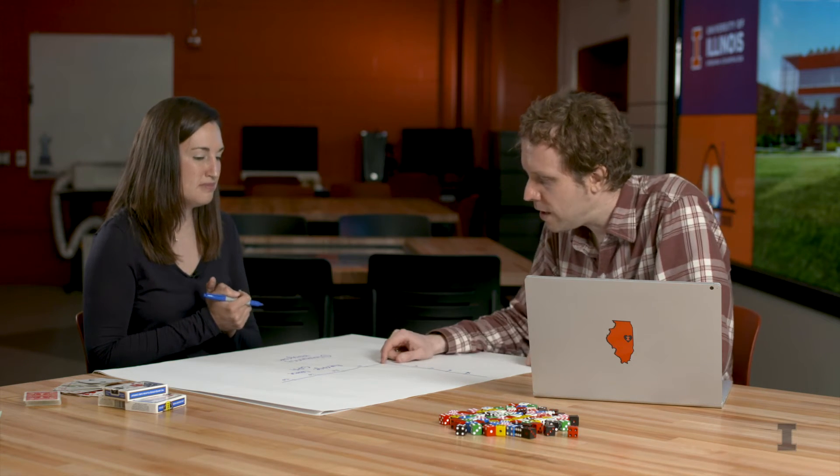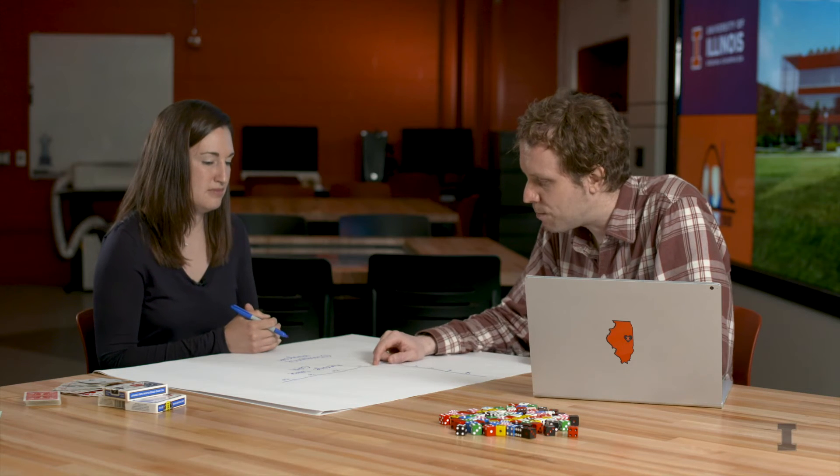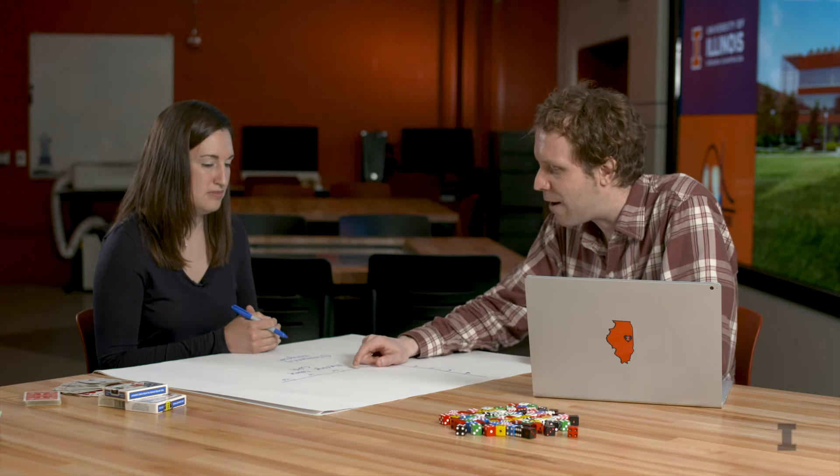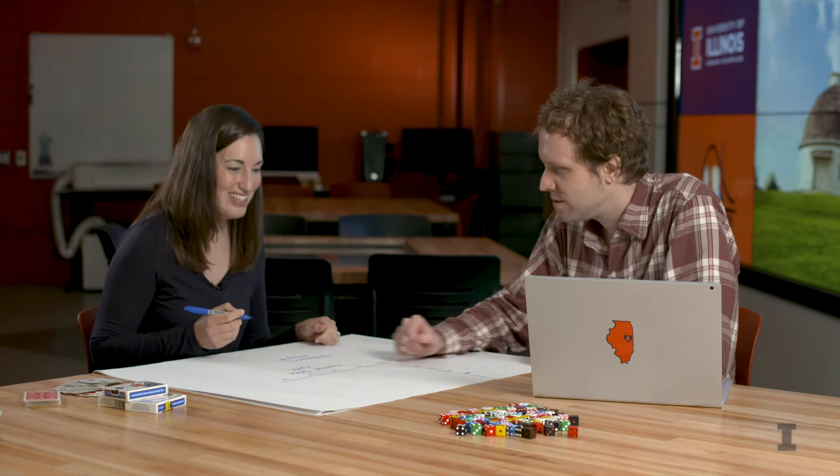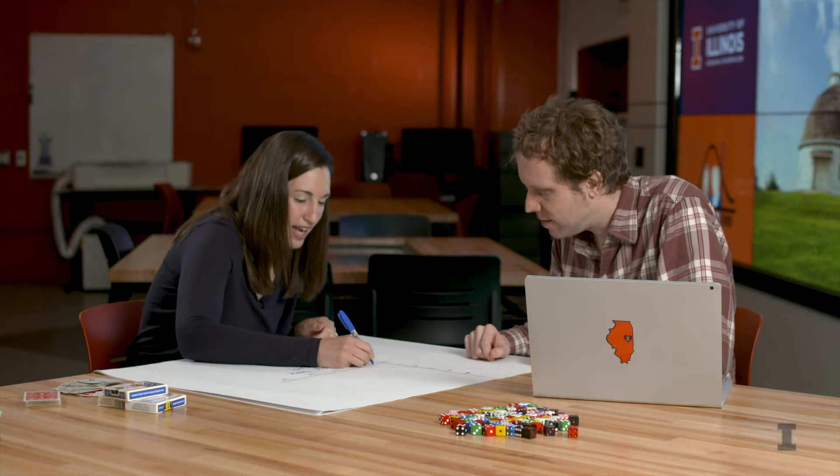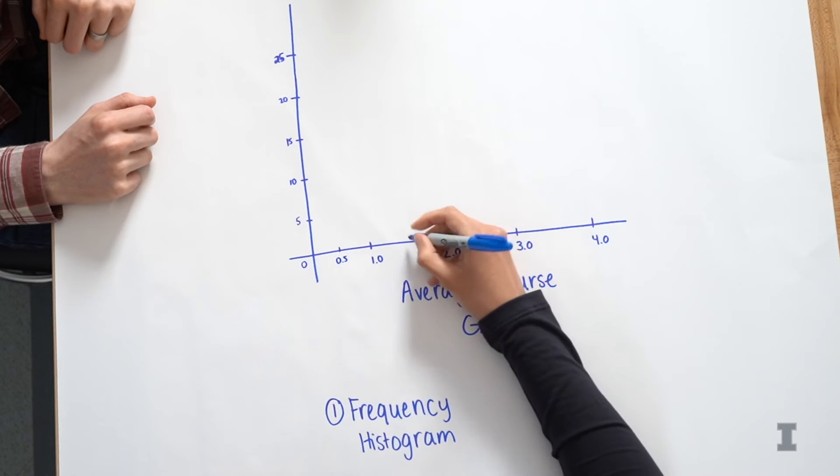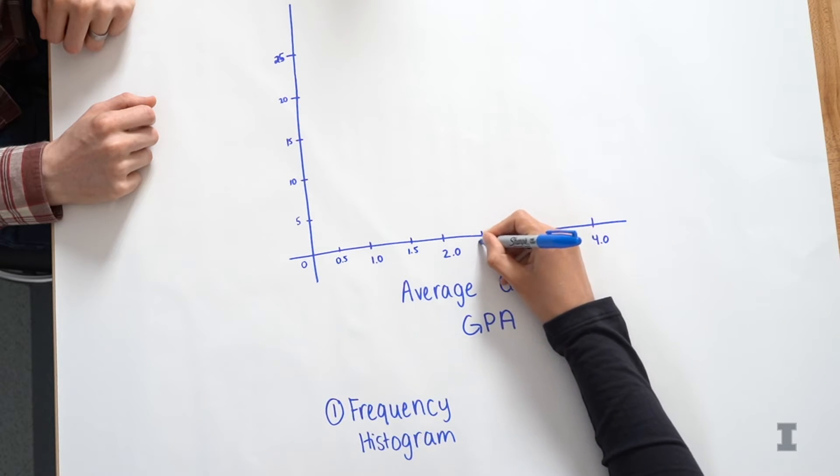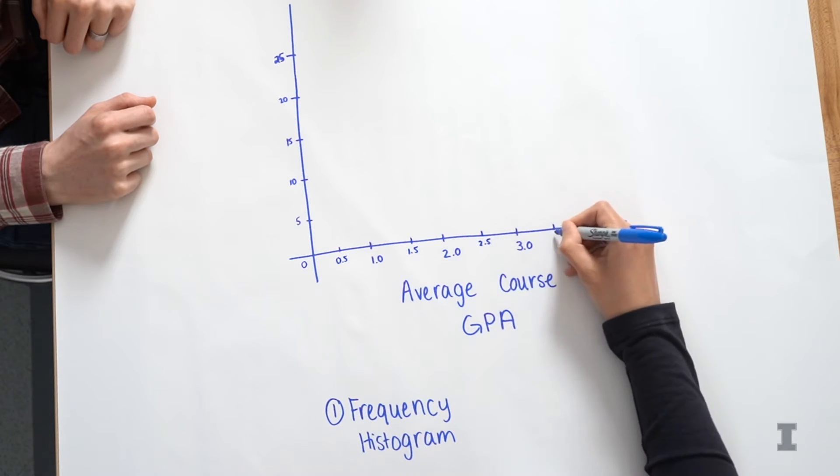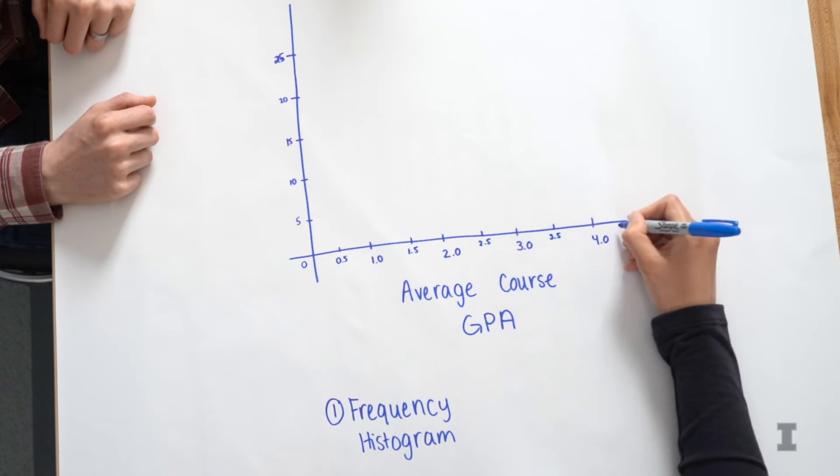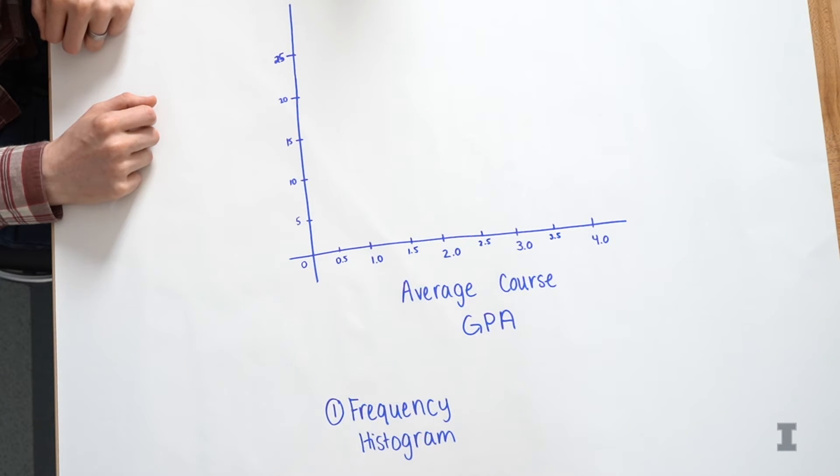Okay. So you're thinking of maybe every single bin being like a basically a half grade. Yeah, exactly. So I can even add those in to my x-axis. And then we're not going to go above 4 for now.